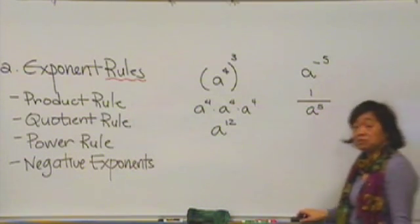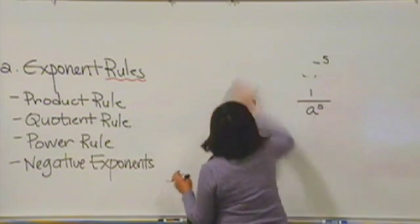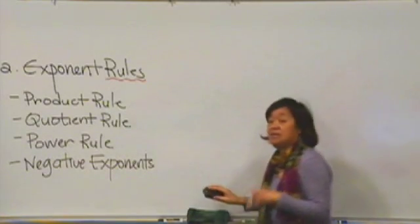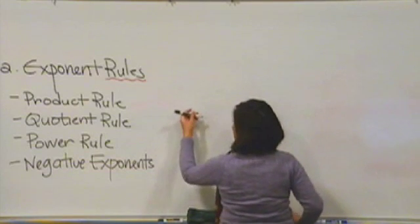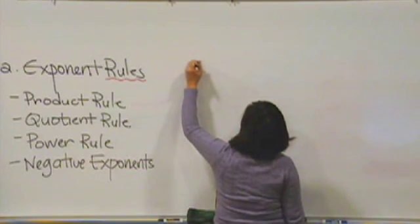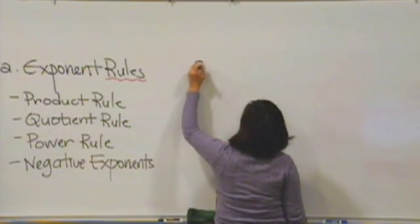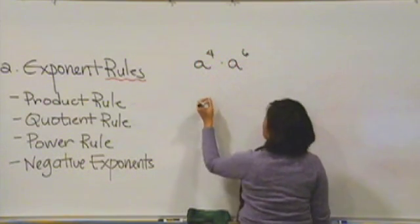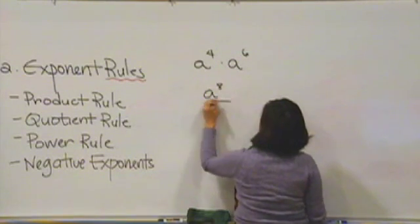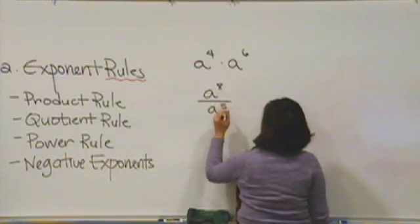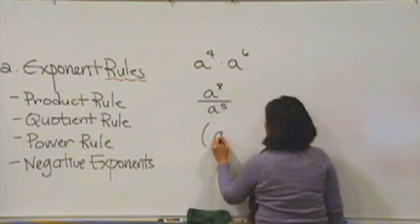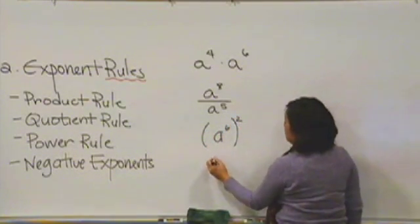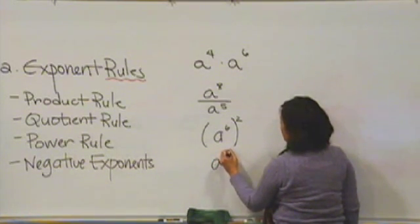So, here, why don't I give you some to try? Remember that what you want to do is you want to hit the pause button, try them, and then I'll work them out for you after you've paused and tried it yourself. So, let's try a product: a to the fourth times a to the sixth. We'll try a quotient: a to the eighth over a to the fifth. We'll do a power: a to the sixth to the second power. And then, finally, we'll do a negative exponent: a to the negative eight.